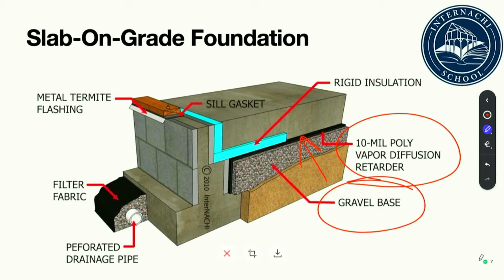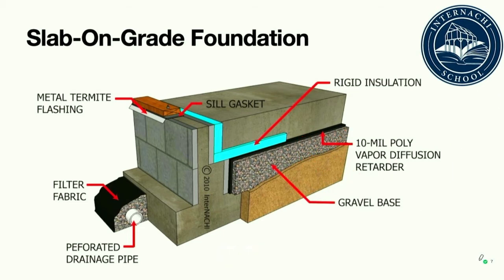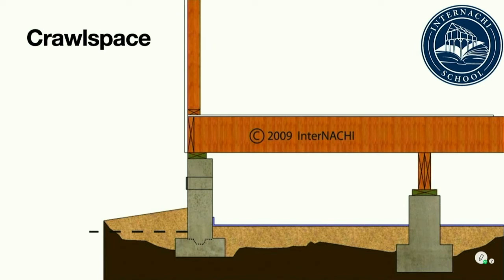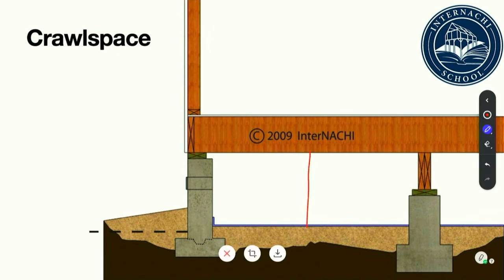Slab-on-grade foundations are popular in areas where there is a high water table — for example, there are very few full basements in southern Florida. In general terms, a slab-on-grade foundation is poured on the grade or ground. A crawl space is an accessible space between the ground and the bottom of the first floor of a home, also referred to as an underfloor space that is not a basement. The story of the house entirely above grade is usually referred to as the main first floor.